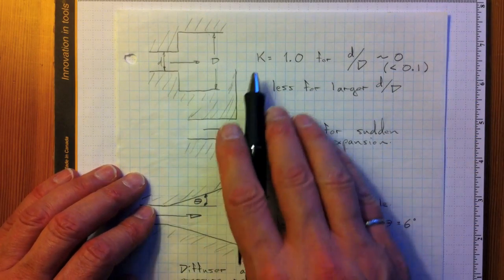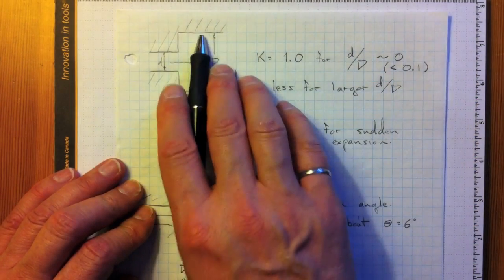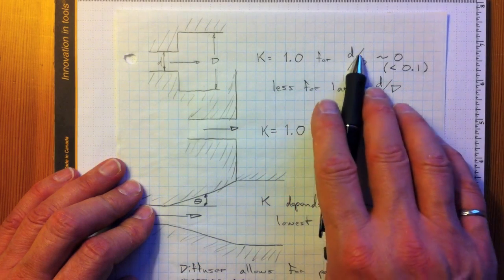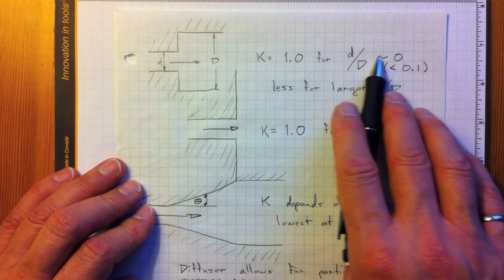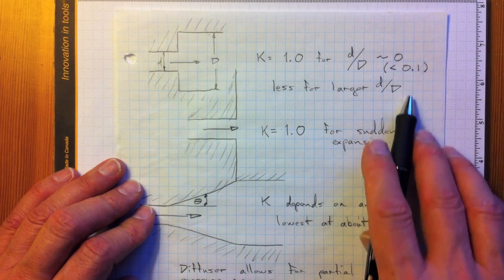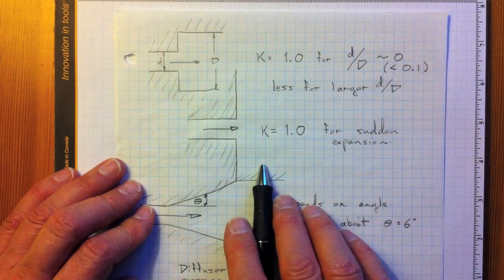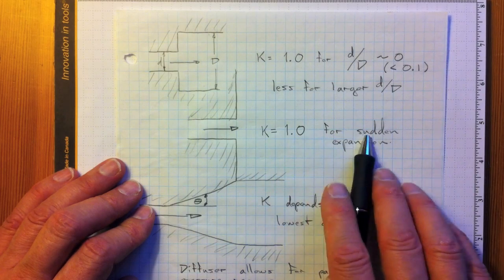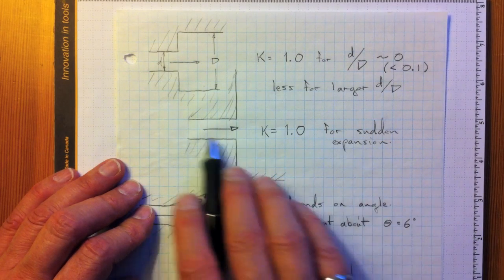Similarly, k is 1 for sudden increases for d over D on the order of 0, i.e. less than about 0.1.